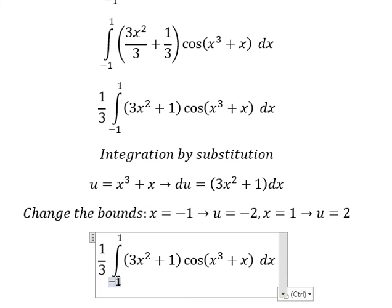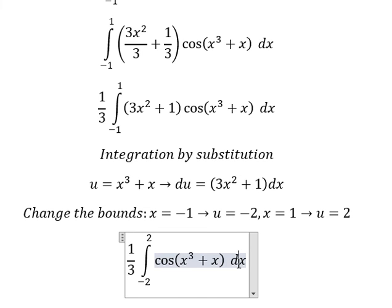So -1 we change to -2, and 1 we change to 2. This one we change to du because we had dx, now we change to du. This one we change to u.